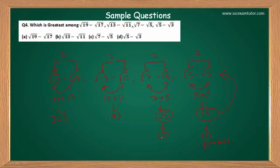After √5−√3 as greatest, the next greatest corresponds to product 35, then 143 is third greatest, and the root corresponding to 323 will be the smallest — because 323 is the greatest product and in the minus case the greatest product gives the smallest root. You were asked to find the greatest, so the answer is √5−√3.